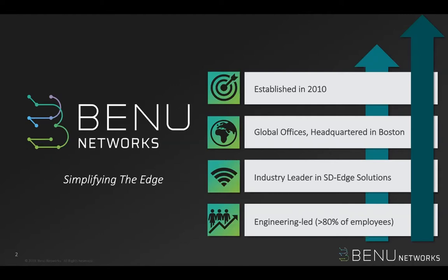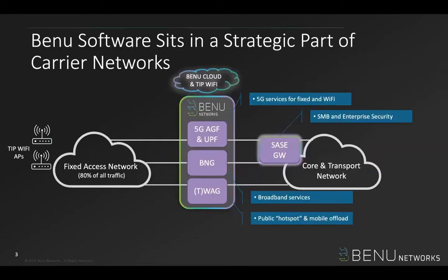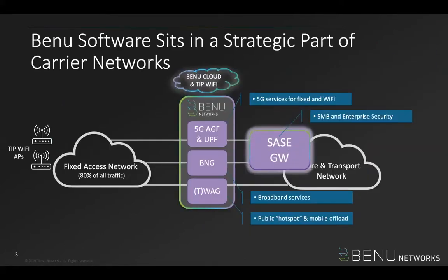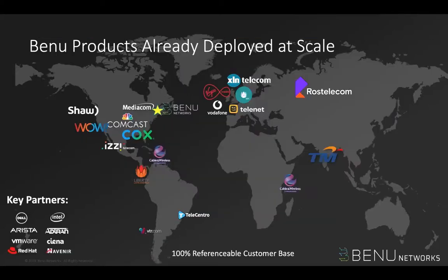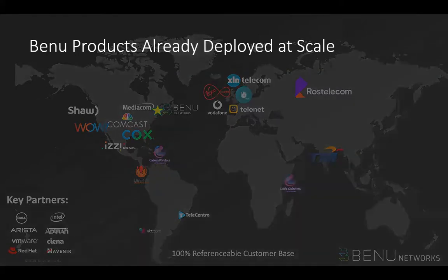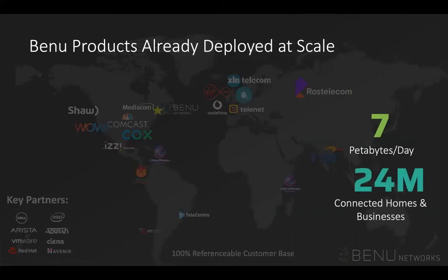The SD edge platform sits in a strategic part of carrier networks, where we can virtualize network functions such as the Wi-Fi access gateway and the broadband network gateway. Today, we'll dive deeper into the SASE service gateway function, and in this example we'll be using the TIP access points. Our platform is deployed at scale globally and currently carries over 7 petabytes a day, as well as connecting 24 million homes and businesses.